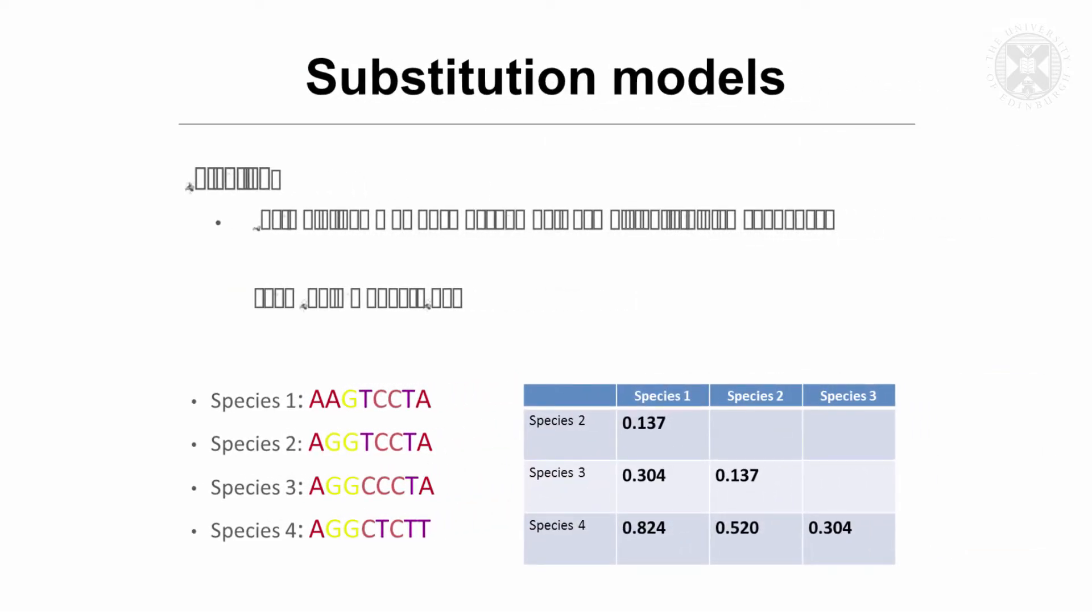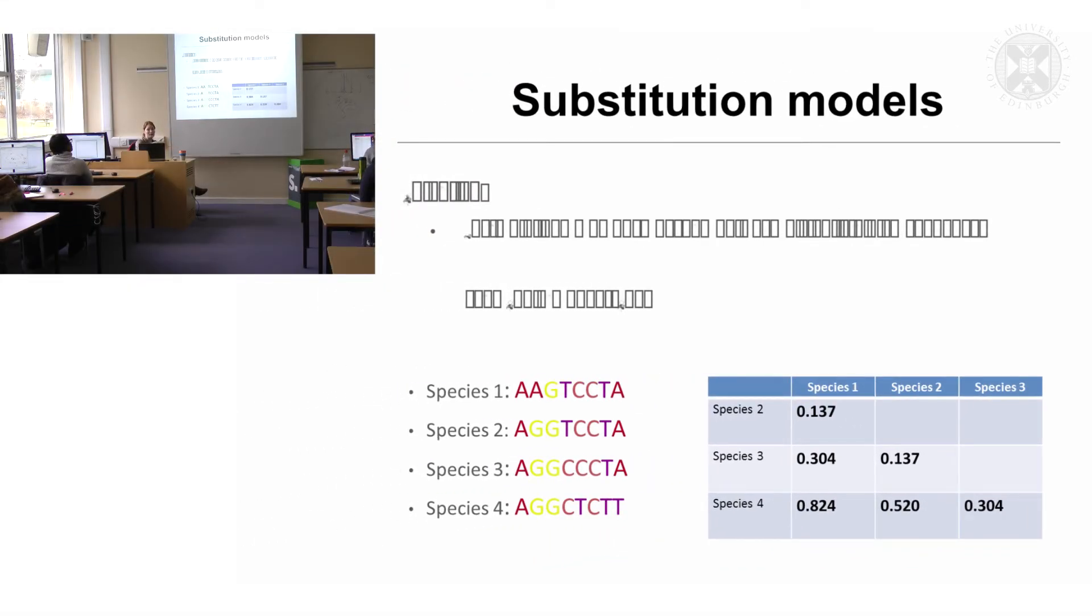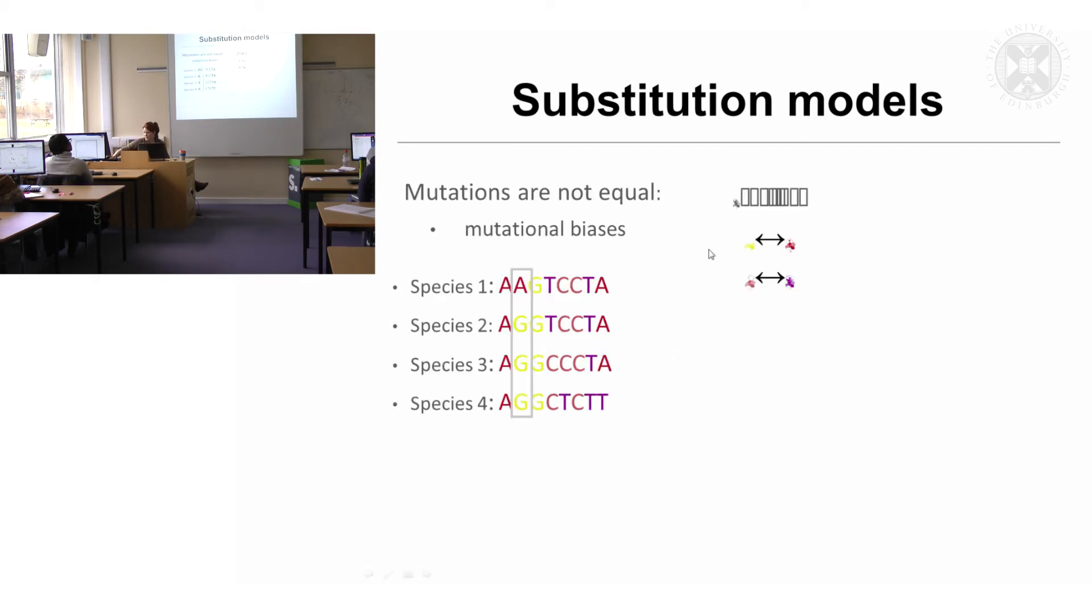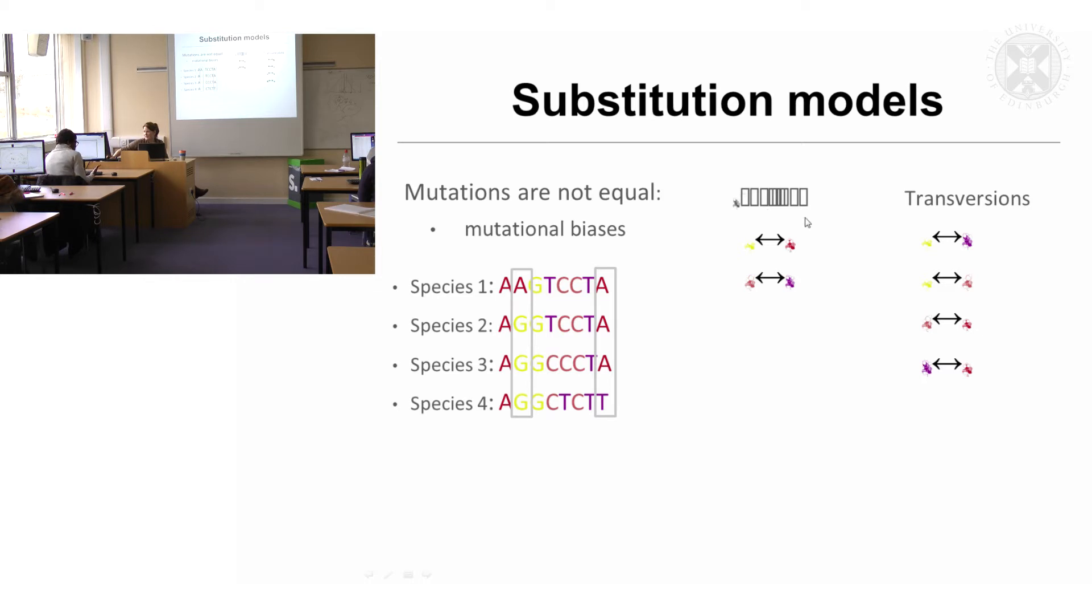So basically, substitution models take that into account and they also take into account that you could have a mutation where you change an A into a G, but because we're talking about maybe hundreds or thousands of years, a G could go back into an A as well, and that might be more likely. So it takes that into account and this is for calculating the distances on the branches. So you get different models. Yeah, so this is what I was saying, not all mutations are equal. So you get transversions which are the less likely ones to happen, which is like here an A to a T because they're the pairs, and you get transitions, which would be an A to a G or a T to a C. And so these are far more likely to happen than these ones.